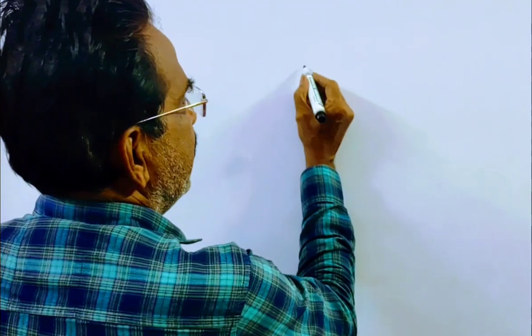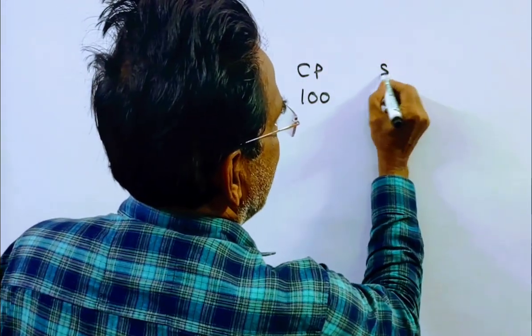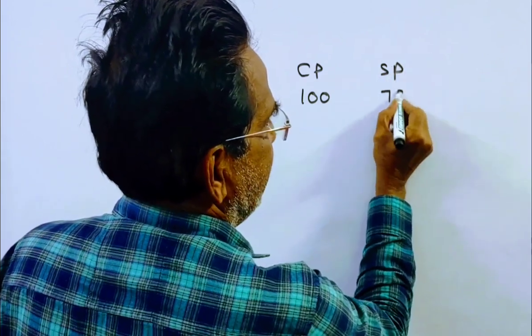See friends, an article is sold at a loss of 25%. What does it mean? If cost price is 100, then the selling price will be 75.